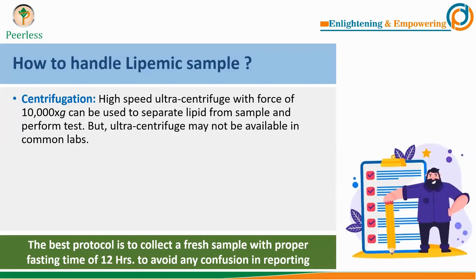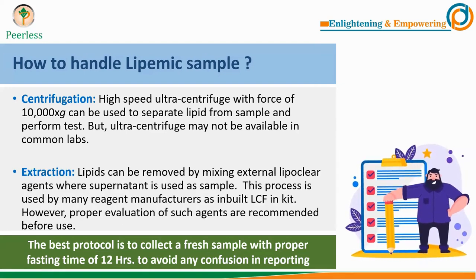Third, you can run the sample in a high-speed ultracentrifuge at a minimum of 10,000 g, which will separate the lipid part from the plasma. However, ultracentrifuges are generally not commonly available in routine laboratories. Fourth, lipids can be removed by mixing an external lipoclear agent, which clears the lipoproteins from the sample and the supernatant can then be used. Proper evaluation is recommended before using such agents for different assays. To reiterate, the best approach is always to repeat the sample collection after proper fasting and then re-perform the assay.